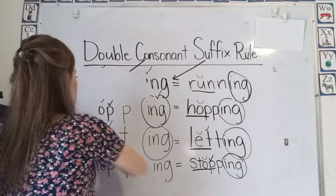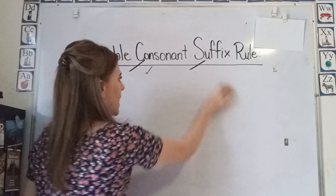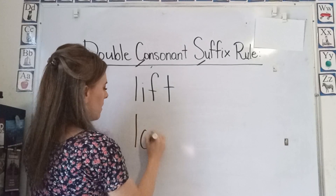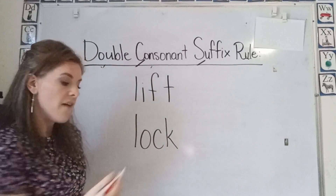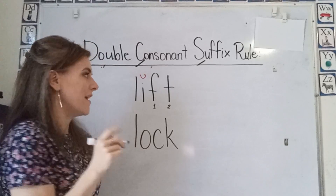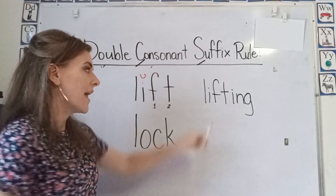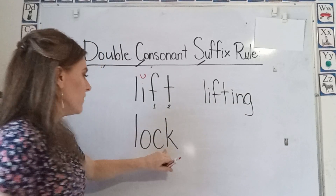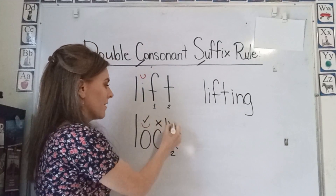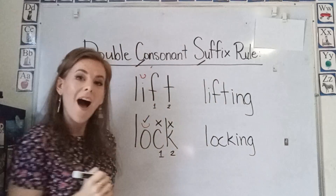Now I'm going to give you some examples of words that you do not double the consonant, even though they have a short vowel. So we have the word lift and lock. Lift does have a short vowel, but we have two consonants. So we do not add a double consonant. We only add our suffix — lifting. Here we have lock. It is short, but it has two consonants. So we do not double the consonants. It's just locking.